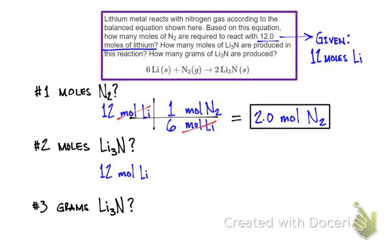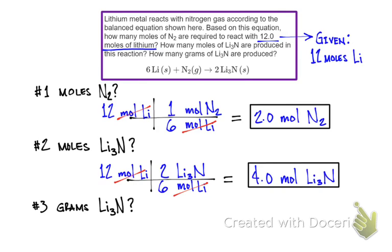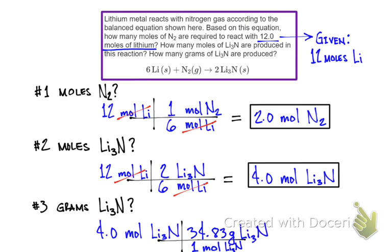We can use the information regarding lithium to find the moles of lithium nitride. For simplicity, let's use 12 moles of lithium as our starting point. Set up the dimensional analysis with the mole ratio between lithium and lithium nitride. Moles of lithium cancel out, which gives us 4 moles of lithium nitride — 12 times 2 divided by 6 equals 4. Now we convert the moles of lithium nitride to mass in grams, and we get 139 grams of lithium nitride, since 4 times 34.83 gives us 139.